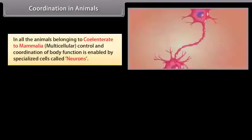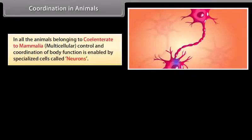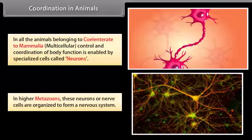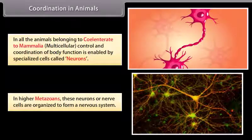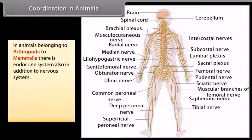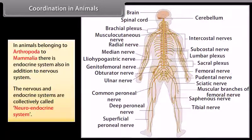Coordination in animals. In all animals belonging to coelentrata to mammalia, multicellular control and coordination of body functions is enabled by specialized cells called neurons. In higher metazoans, these neurons or nerve cells are organized to form a nervous system. In animals belonging to arthropoda to mammalia, there is an endocrine system also in addition to the nervous system. The nervous and endocrine systems are collectively called the neuroendocrine system.